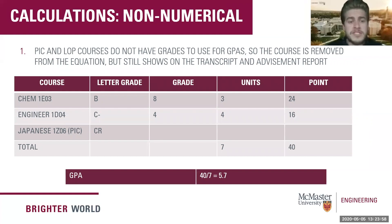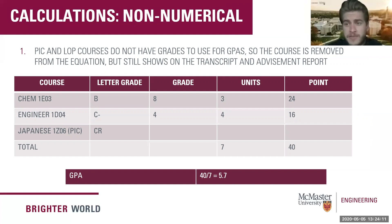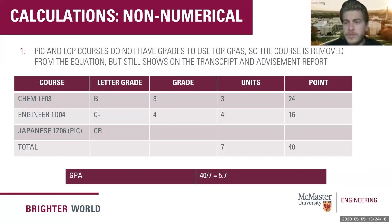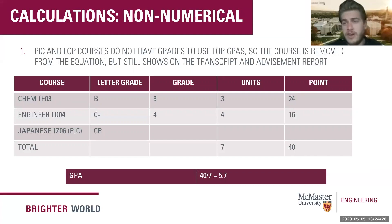In this example, Chem 1E03 and Engineer 1D04 have letter grades, but the student opted to take Japanese 1Z06 as a PIC course. They received credit for the course — a non-numerical grade — so it is not used in the GPA calculation. There is no grade or units to include, and the resulting GPA is a 5.7. The course still appears on the transcript with its non-numerical grade, but there is no grade to associate for GPA purposes.